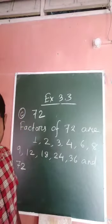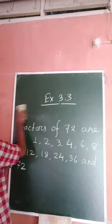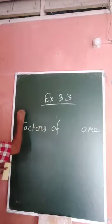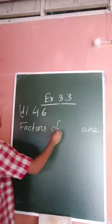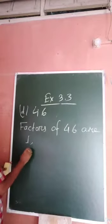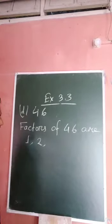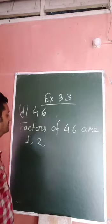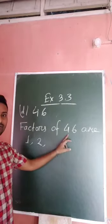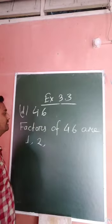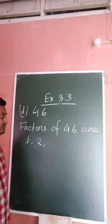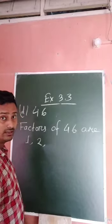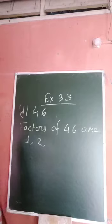Next one is 46. Factors of 46: 46 cannot be divided by 3 because 6 plus 4 is 10, and 10 is not divisible by 3. You cannot divide by 4 either. Since the number is not divisible by 3, it is also not divisible by 6. 7, 8, 9, 10, 11, 12 also cannot divide.